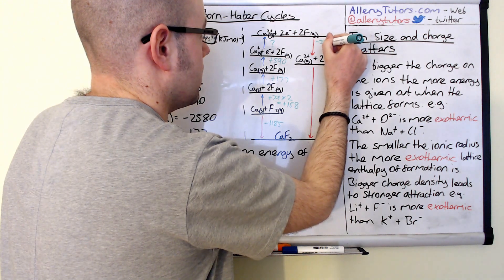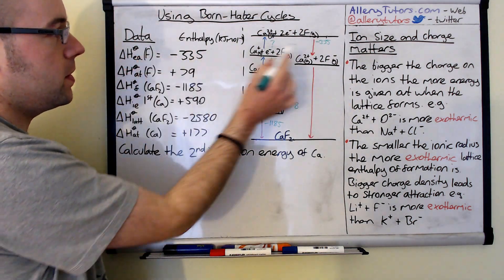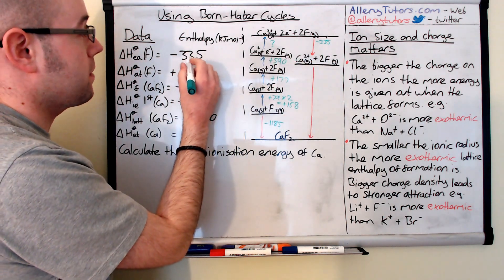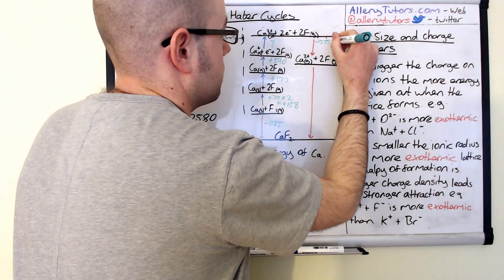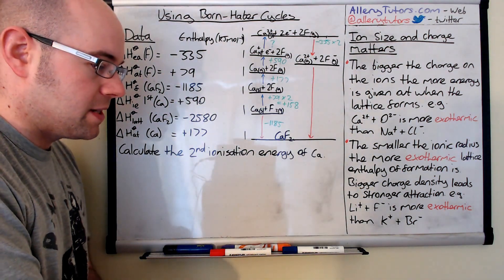Okay but again as you can see this data is telling us the electron affinity of one fluorine, we've affinitized two fluorine atoms. So we need to have two lots of minus 335. So it times that by two. And what we should get is minus 670.